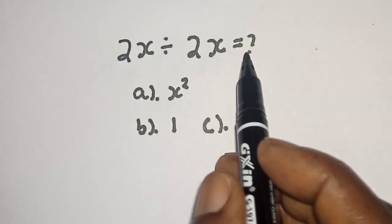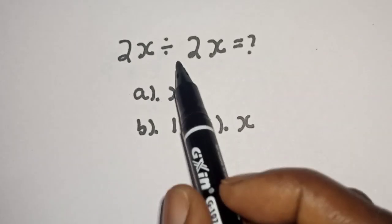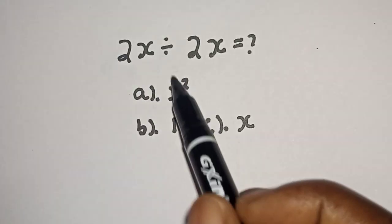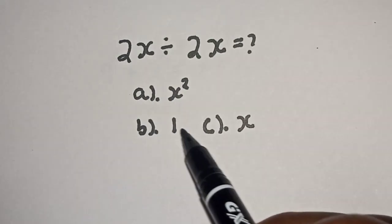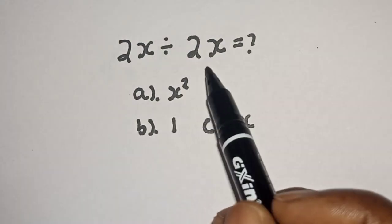2x divided by 2x equals what? Hi everyone, welcome to my class. In this class we want to find the value of x from this nice math problem with the following options: a is equal to x squared, b is 1, and c is equal to x. But before we proceed, please don't forget to like, share, comment, and subscribe.